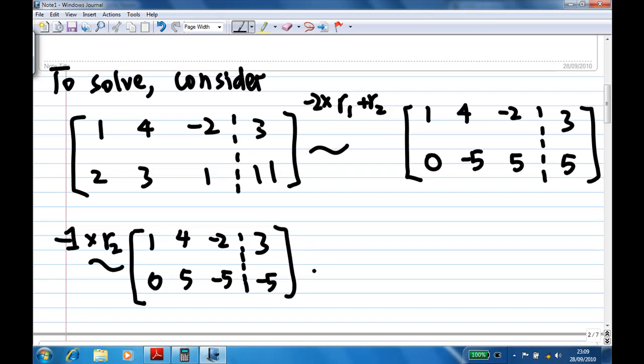And then continue to multiply the second row by 1 over 5. Get 1, 4, minus 2, 3, and 0, 1, minus 1, minus 1.